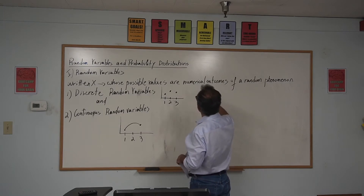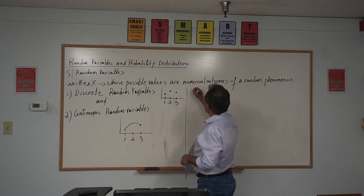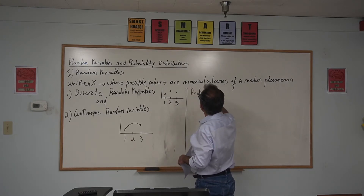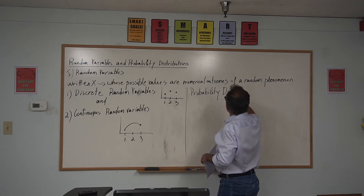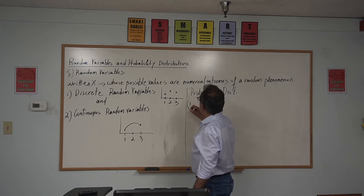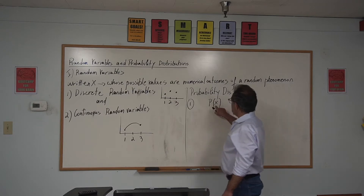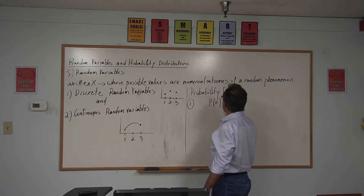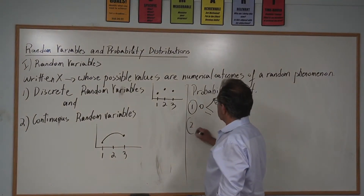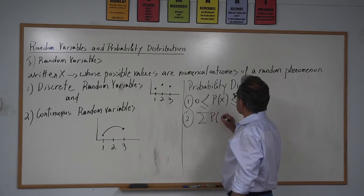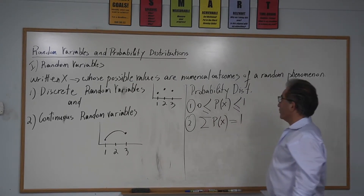For a probability distribution, there are two conditions. Number one: the probability of each random variable has to be between zero and one. And number two: when we add all the probabilities — the sum of the probabilities — we should get one.